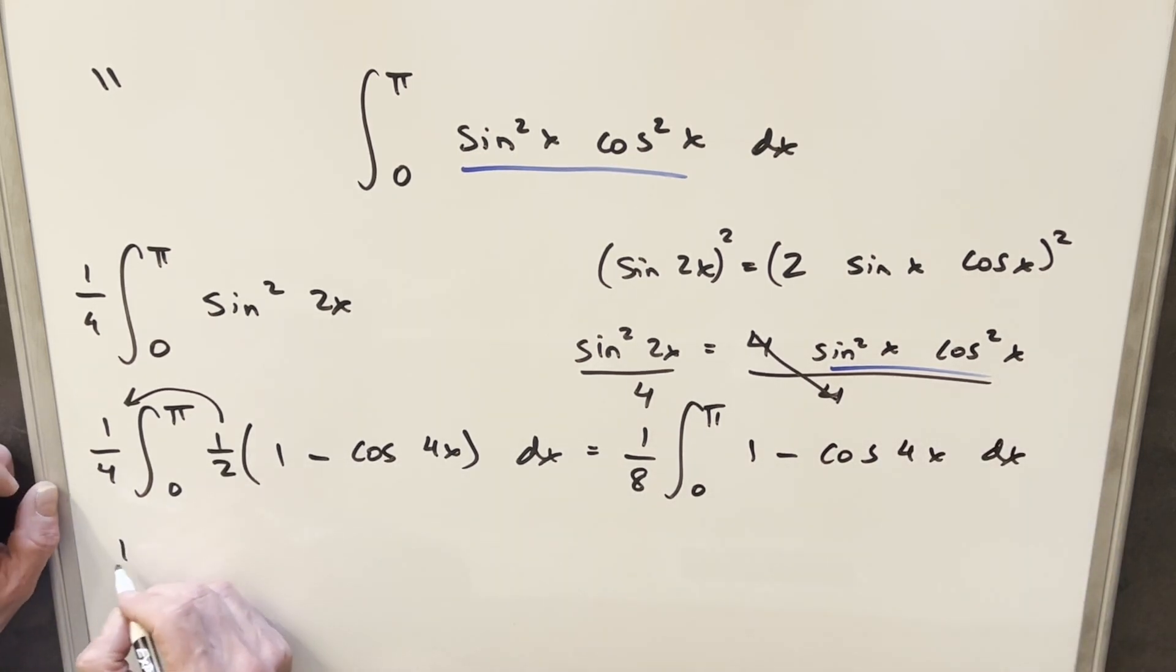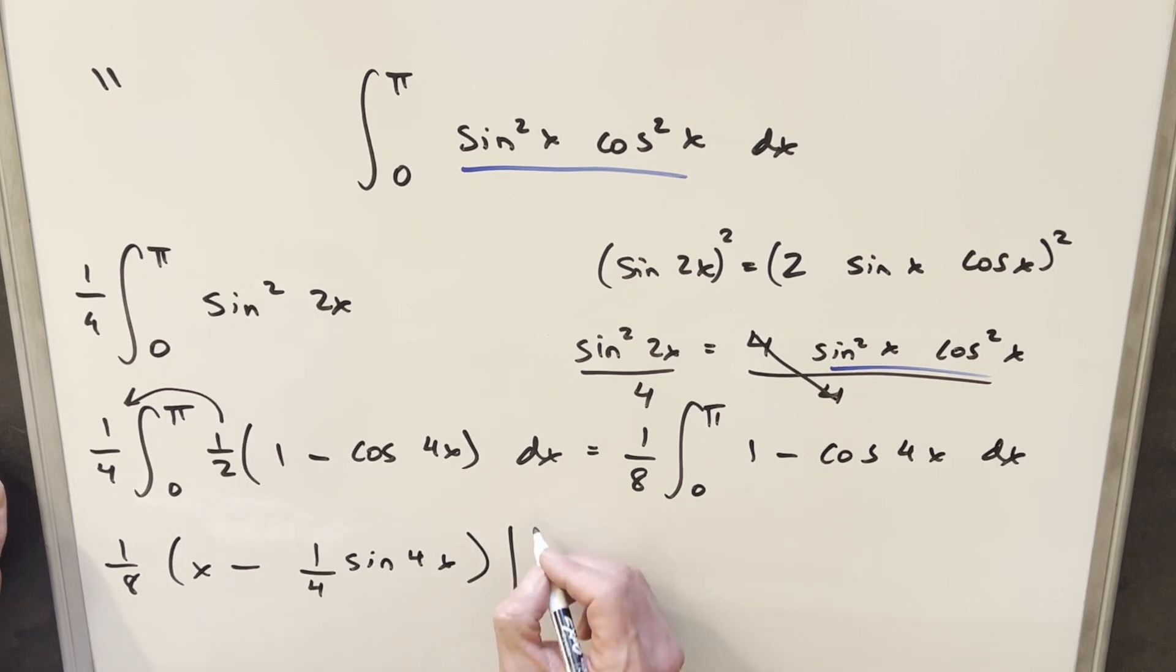And now I'm ready to integrate this thing. So integrating 1, we just get x. Integrating cosine 4x, we have sine 4x. But we need to take a 1 fourth out front to deal with this 4x. And we just need to evaluate it from 0 to pi.